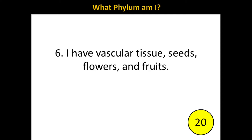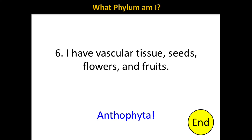For the rest of the questions, you will be answering: what phylum am I? Number six: I have vascular tissue, seeds, flowers, and fruits. The correct answer is Anthophyta.